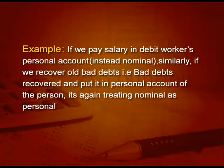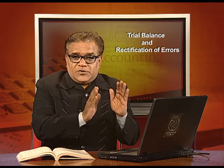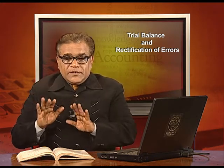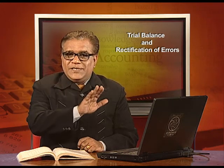For example, if we pay salary and debit the worker's personal account instead of the nominal account salary, that is an error of principle. Similarly, if we recover some old bad debts and put it in the personal account of that person — treating nominal as personal — these errors are not going to affect the trial balance, because debit is recorded in debit and credit in credit. Trial balance proves only arithmetical accuracy, which is still maintained.